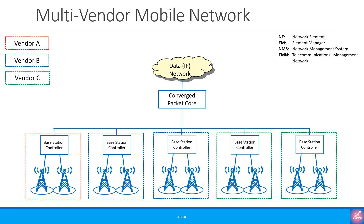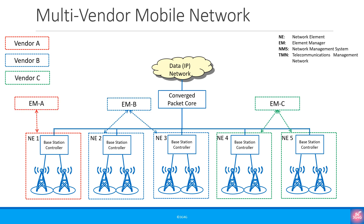Let's take a basic multi-vendor network — please note that things are oversimplified here; in reality it's far more complex. In this example, we've used three different vendors for the base stations. At a high level, you can think of each base station as a network element or NE. In an ideal world, one would have one element manager or EM that collects all the data, logs, alarms and so on from all these elements. However, because these base stations come from different vendors, each vendor will have their own element manager, as you can see here.